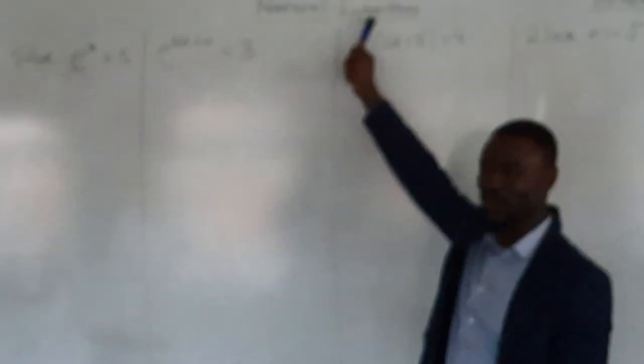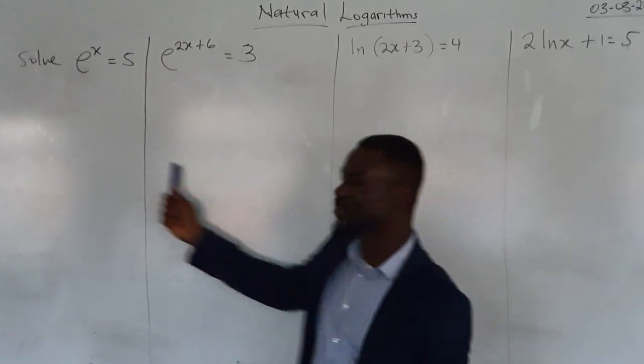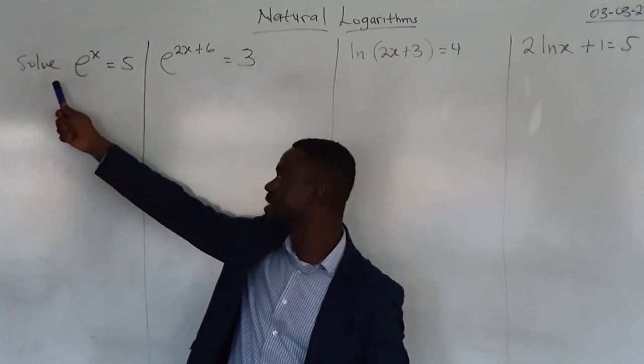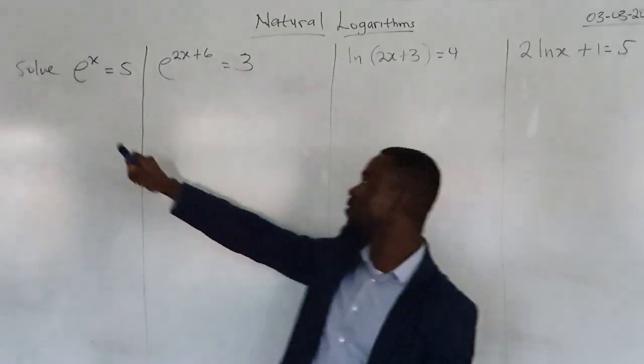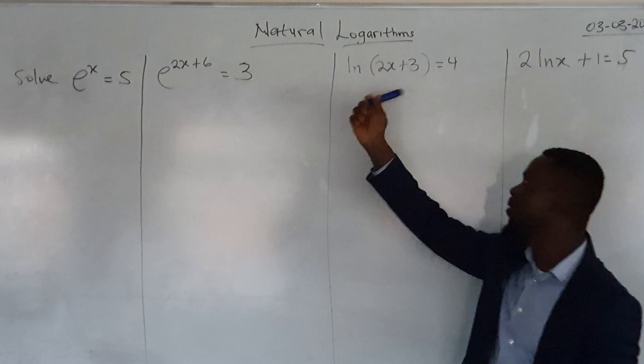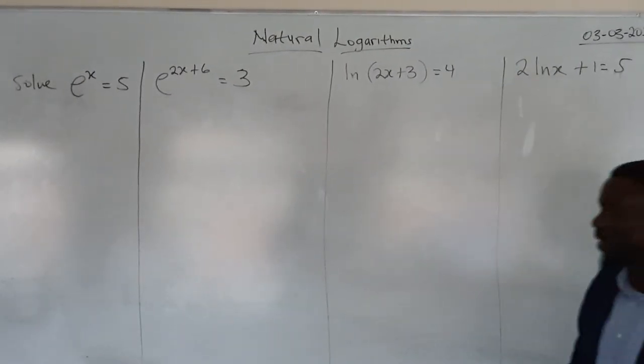Today we're looking at natural logs, how to work with natural logs. We've got four questions which we're going to go through and apply it. First one is solve e^x = 5, e^(2x+6) = 3, we've got ln(2x+3) equals that, and this one.